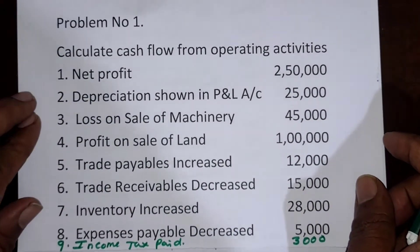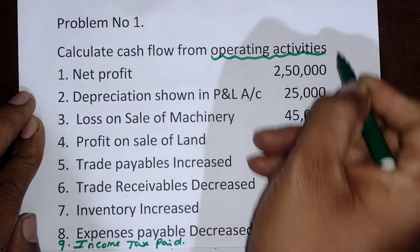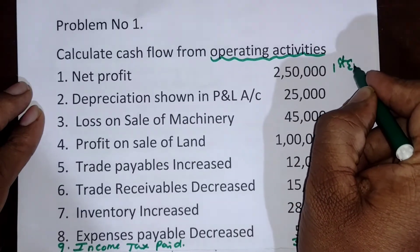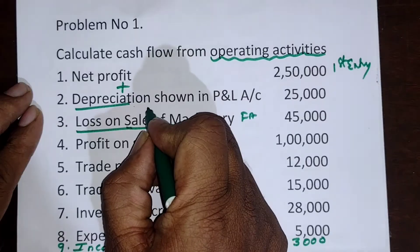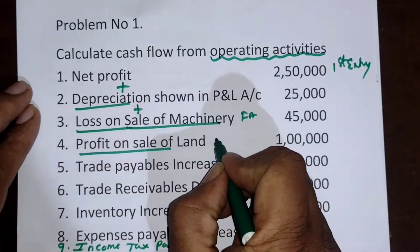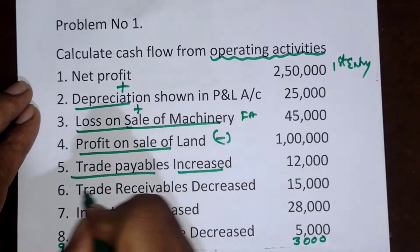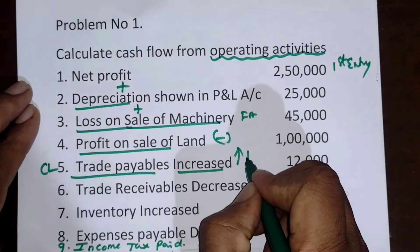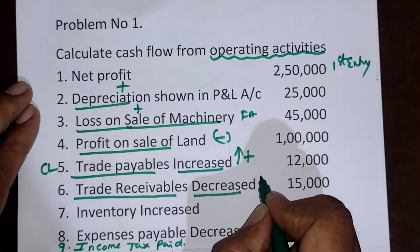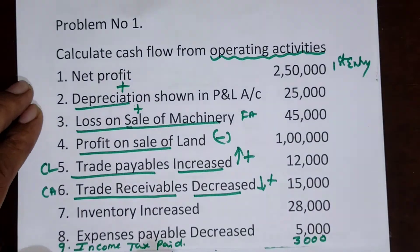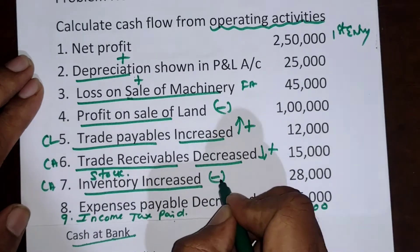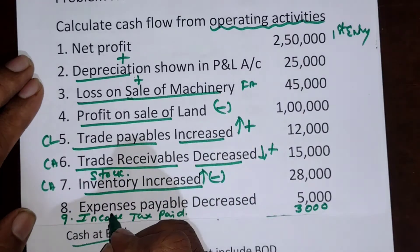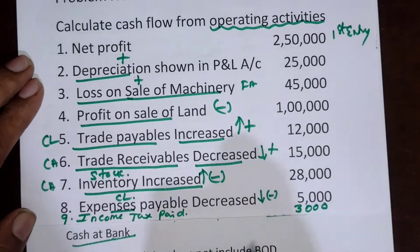Now let's look into the problem: Calculate cash flow from operating activities. The given items are: net profit, depreciation (plus), loss on sale of machinery — fixed asset (plus), profit on sale of land (minus). Trade payable increased — trade payable is a current liability, increased means plus. Trade receivable decreased — current asset decreased means plus. Inventory increased — inventory is stock, a current asset, so increased is minus. Expenses payable decreased — current liability decreased means minus. Income tax paid is to be deducted at the end.